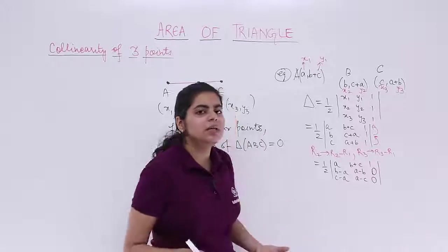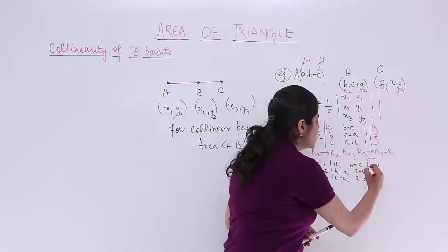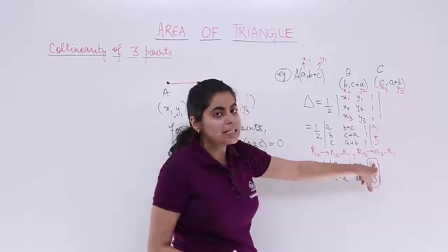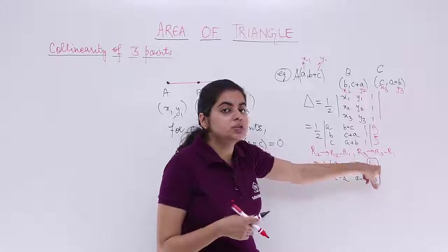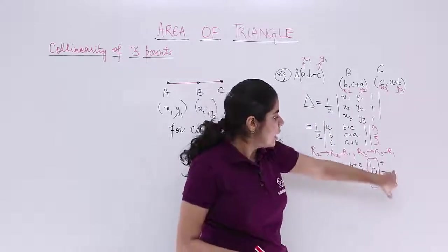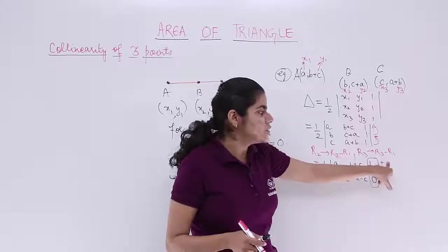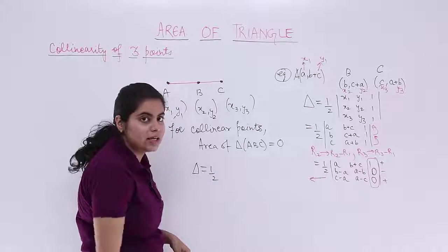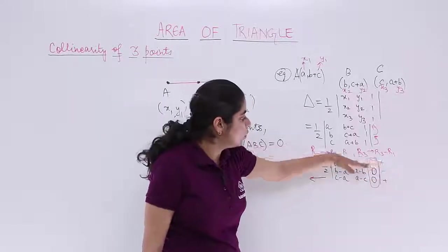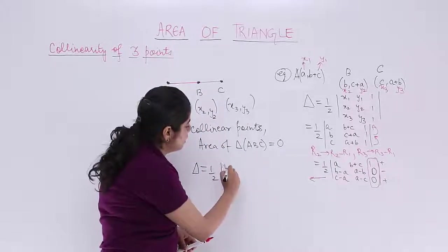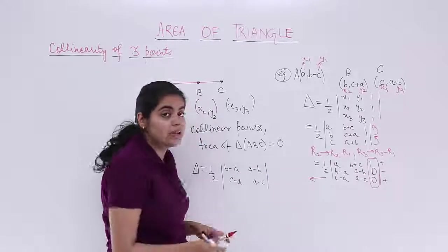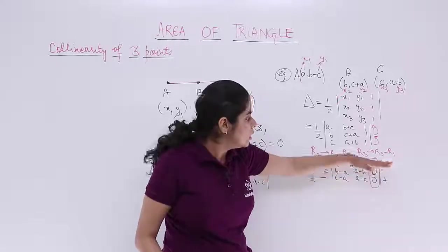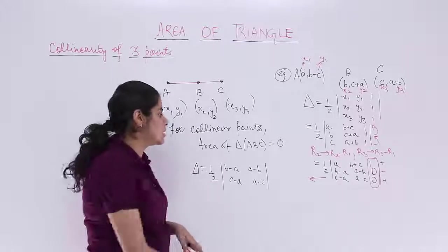Now what is left is simple evaluation. Expanding along the third column is beneficial because it has the maximum number of zeros. The element at the third column, first row has position (1,3), so 1+3=4, which is even — giving a positive cofactor sign. We take the sub-determinant by ignoring that column and first row, leaving: |B−A, A−B; C−A, A−C|.